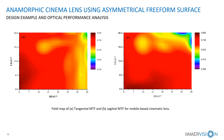The tangential MTF and sagittal MTF are mapped across the full field of view at 110 cycles per millimeter spatial frequency. The MTF values are over 45% at 0.8 field. It is demonstrated that the MTF gradually reduces across the entire field of view. The smoothness of the MTF indicates that the X-Y polynomial surface is smooth over the entire field of view.